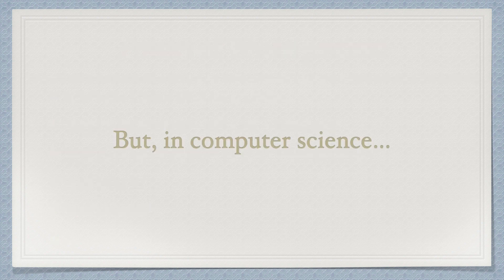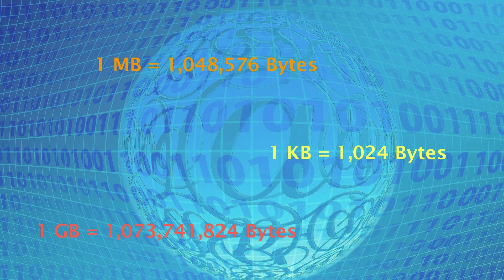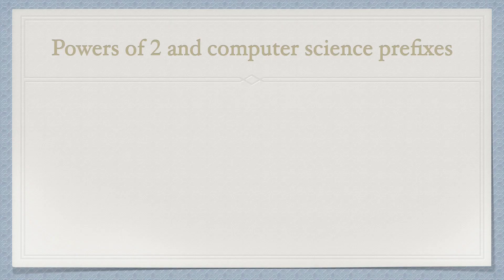But in computer science, 1 kilobyte is more than 1000 bytes — it is 1024 bytes. 1 megabyte is more than 1 million bytes. 1 gigabyte is more than 1 billion bytes. This is related to powers of 2. The computer science prefixes are related to powers of 2.